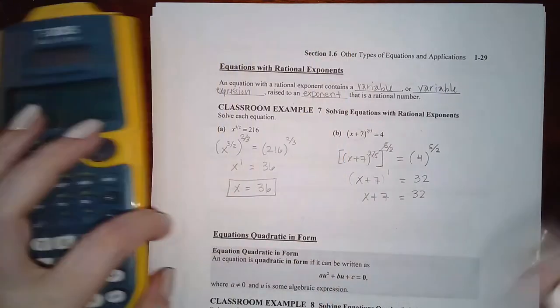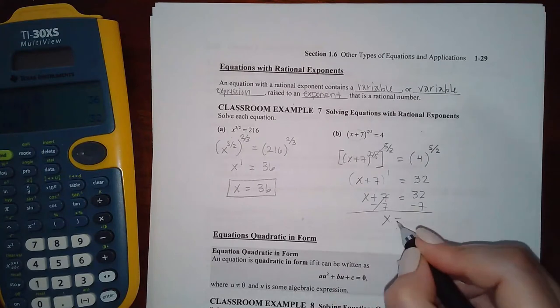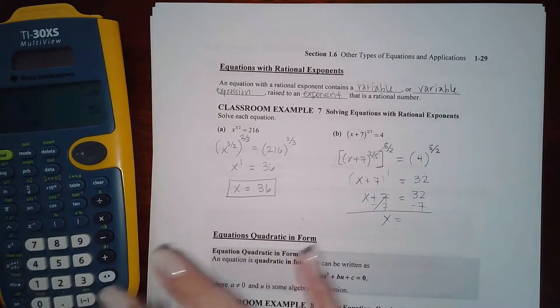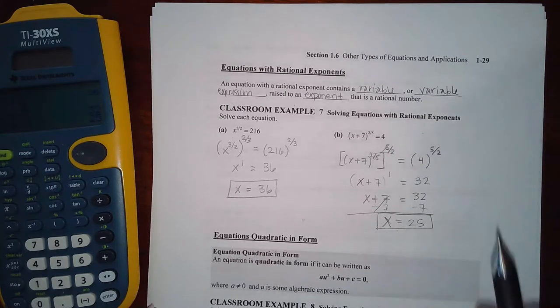And so if I continue to solve for x, I will minus seven on both sides getting 25. So x equals 25 in this case.